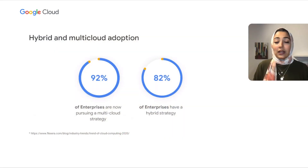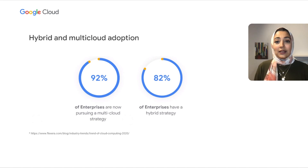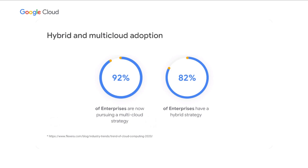With the growing interest in adoption of hybrid and multi-cloud architectures, I find myself working with a lot of customers that are looking for guidance on architecting their platforms and choosing where their applications and services reside. Today, we will briefly review the difference between hybrid and multi-cloud, then present some of the more common patterns we've seen with our customers, and then have a Q&A with Scott to share his experience and insights.